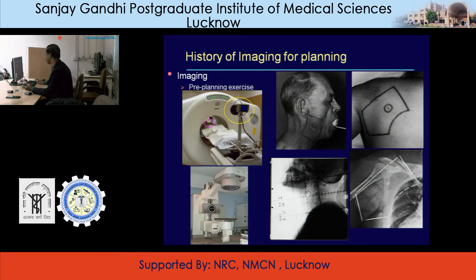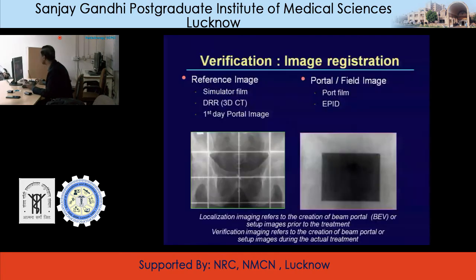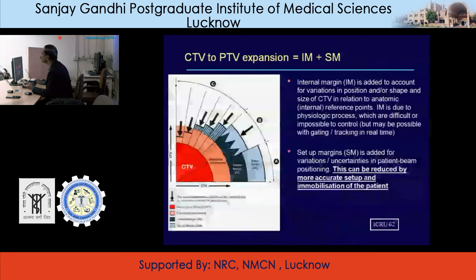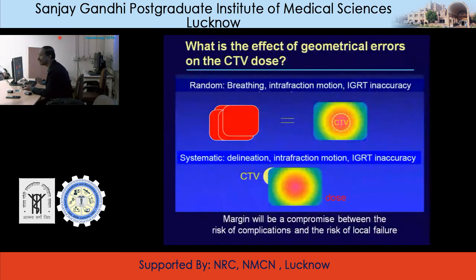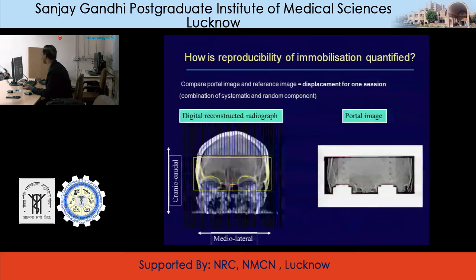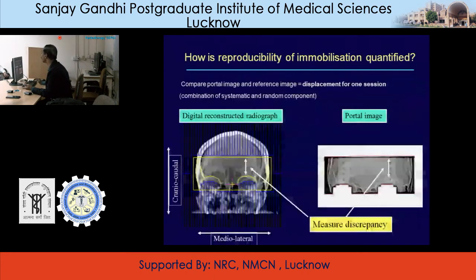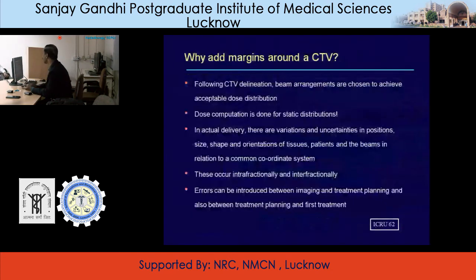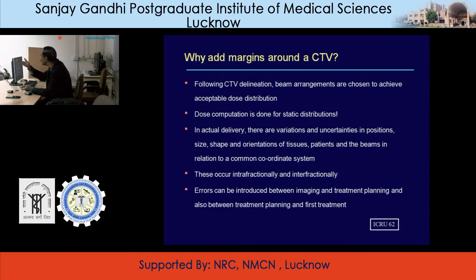When all these plannings have been done, the assumption was that the patient is going to be treated exactly the way they planned. Does it happen in real practice? No — errors have been introduced. Following CTV delineation and beam arrangement to choose an acceptable dose distribution, dose computation is done on a static image. This means today a patient is positioned a certain way, but tomorrow there may be variations, and those variations are not accounted for.